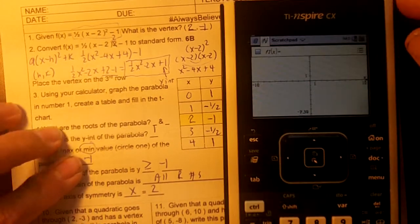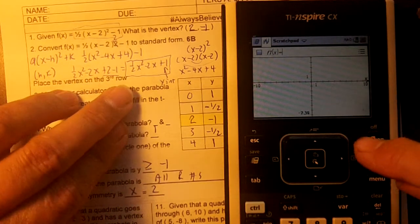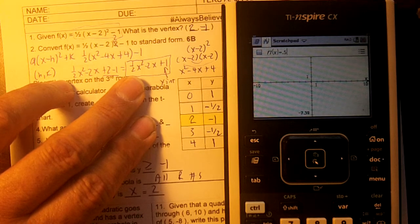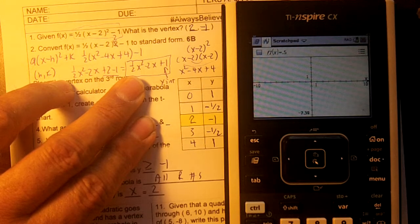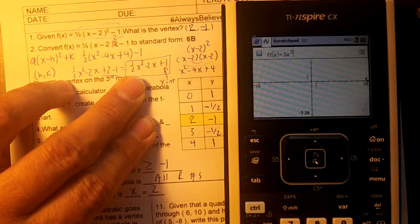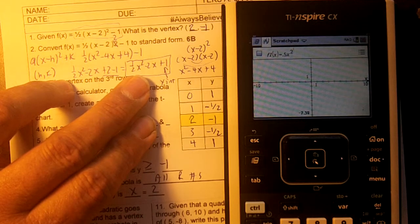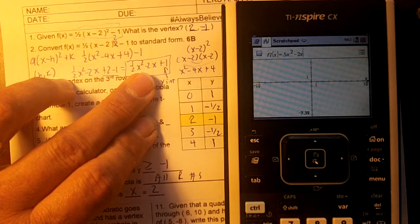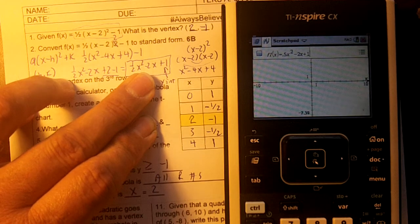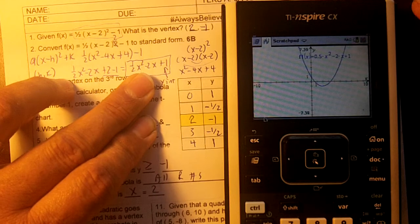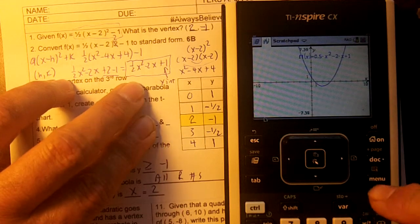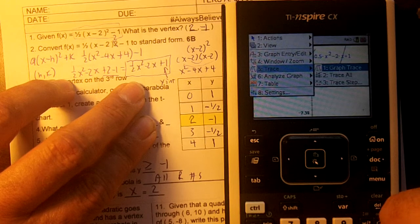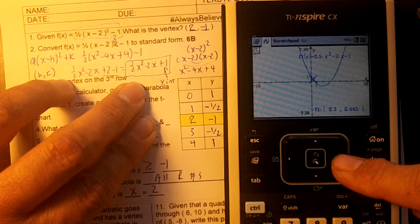So to get this on the calculator, sorry about that. We're going to type in, let's type in this one. Let's do 0.5x squared, and then minus 2x, plus 1, hit enter. So we have our parabola. Now then we're going to hit menu, 5, 1 for graph trace. We're going to go down.